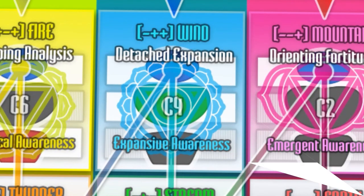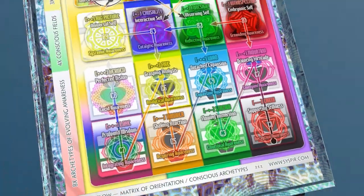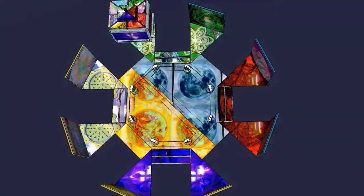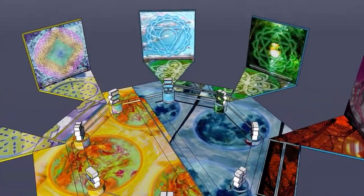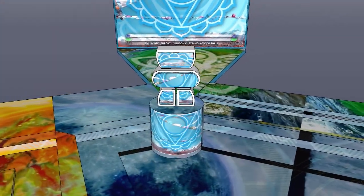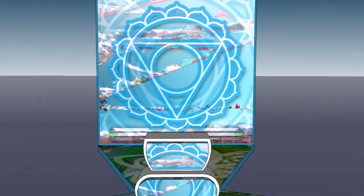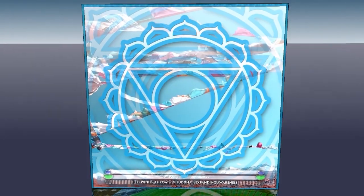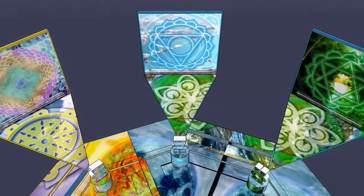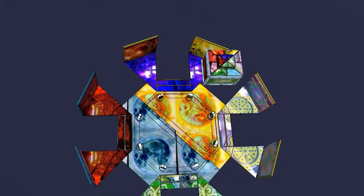Wind: Detached Expansion, Expansive Awareness. Minus, Plus, Plus. Body Static, Heart Dynamic, Intellect Dynamic. Throat Chakra: Exploration, Communication, Expansion and Adolescence. Awareness is established in the expanding quest of the wind.